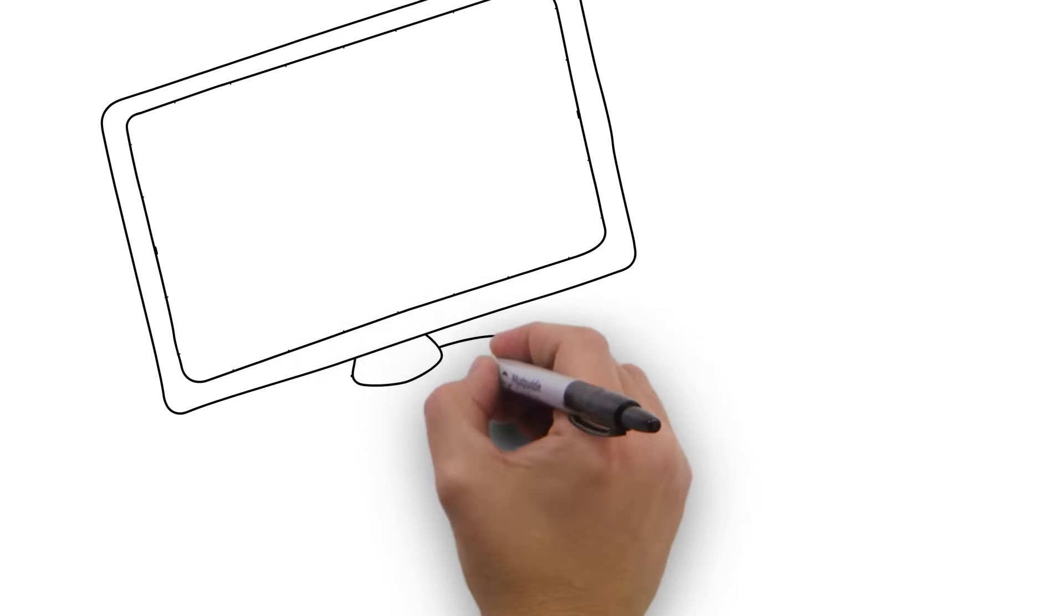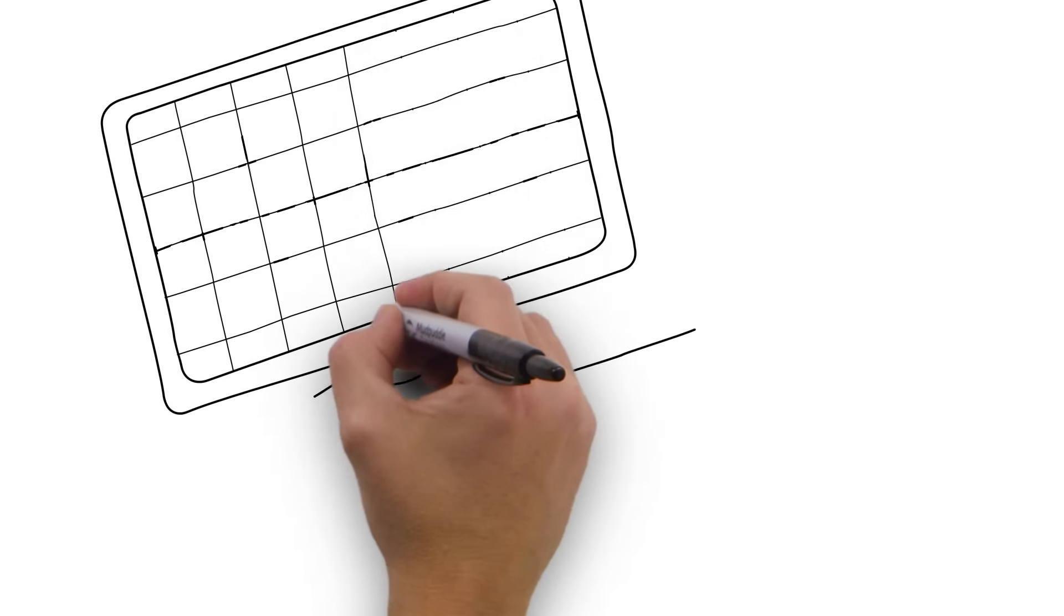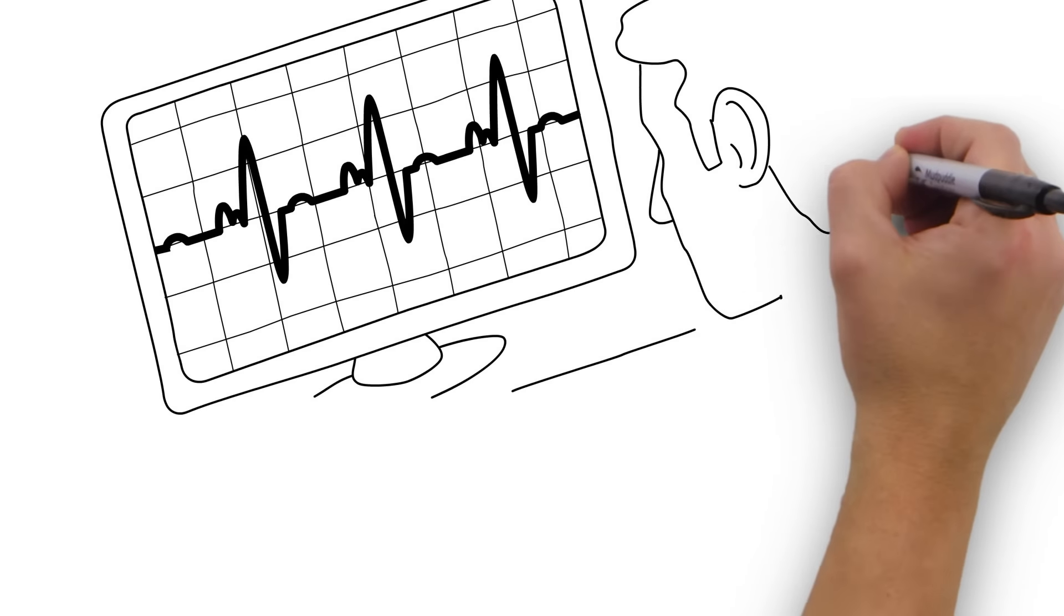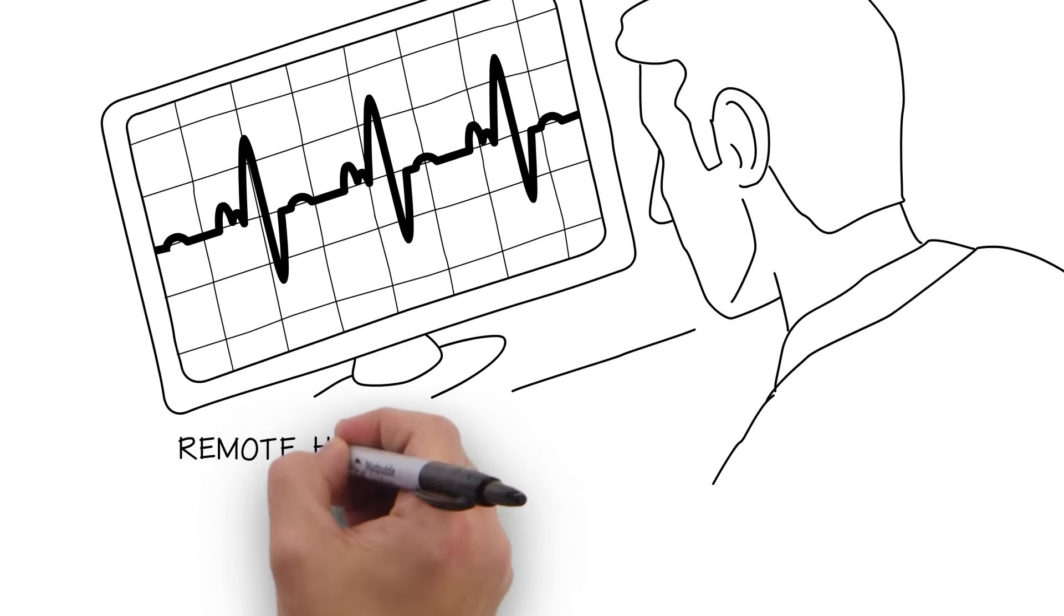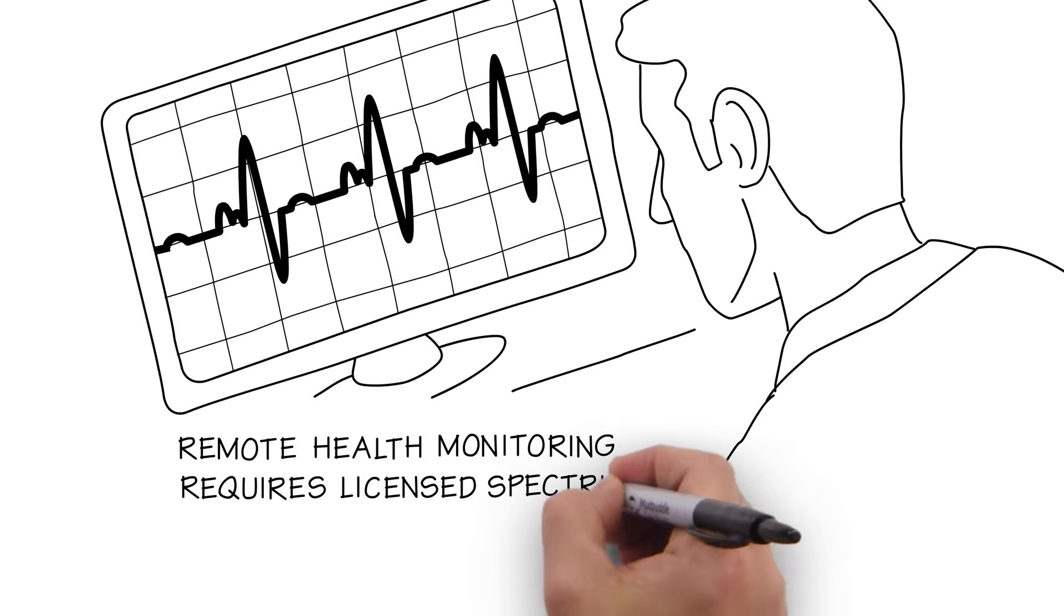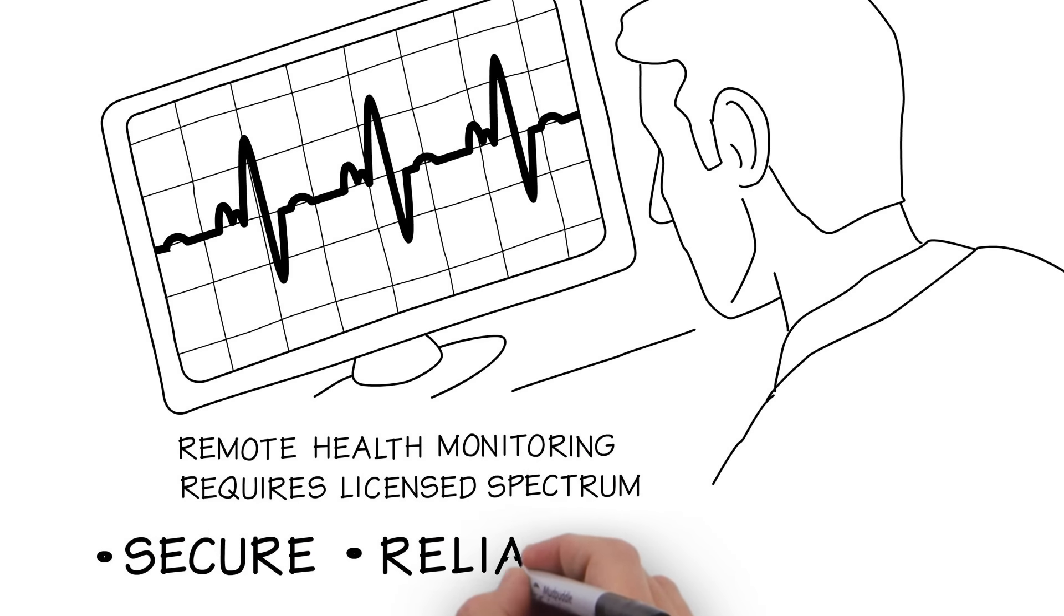While America's wireless companies need both licensed and unlicensed spectrum, there are services when a licensed wireless network is needed, such as remote health monitoring. If your irregular heartbeat is being monitored by your doctor, your wireless connection has to be available and secure anywhere, anytime.